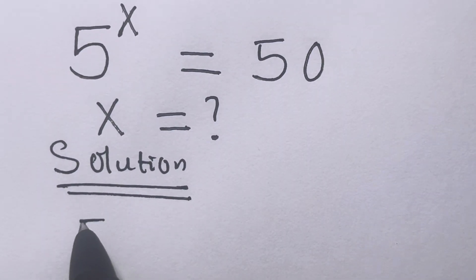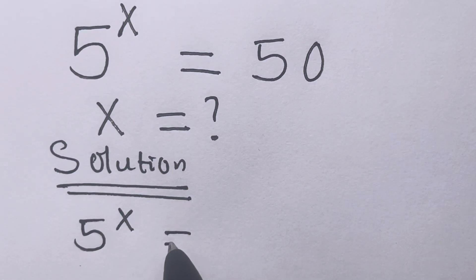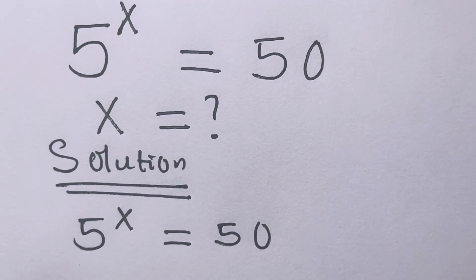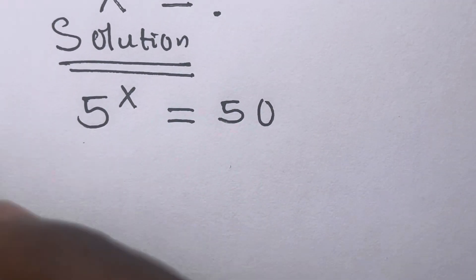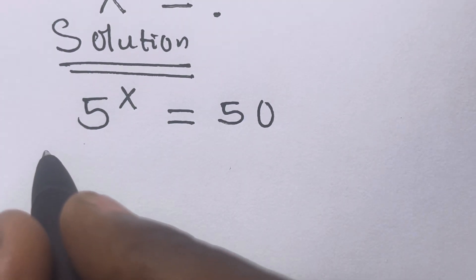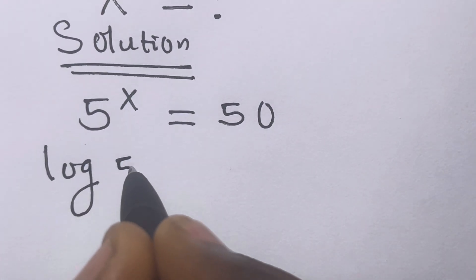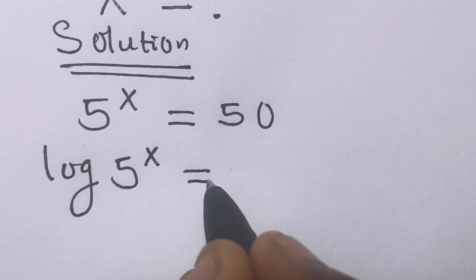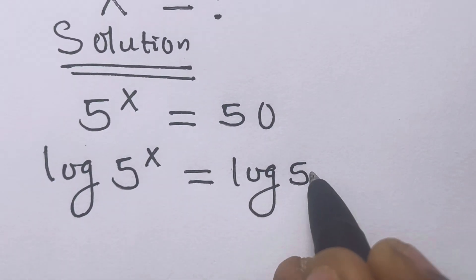We have 5 raised to the power x equals 50. The first step we have to do is introduce log to both sides, so that we have log of 5 raised to the power x equals log 50.